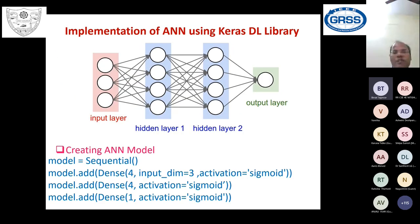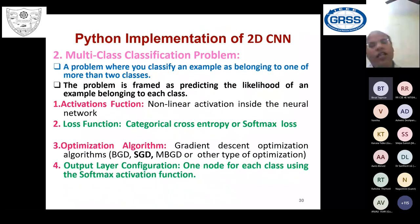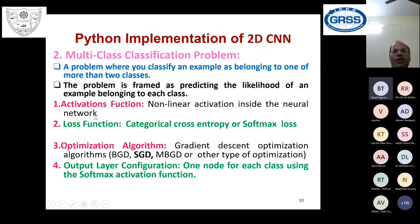There are three ways to create an ANN or CNN model: the Sequential method, the Functional API method, and the Subclassing method. For multi-class classification, the activation, optimizer, and output layer configuration remain similar, but the loss function changes to categorical cross entropy (softmax loss).